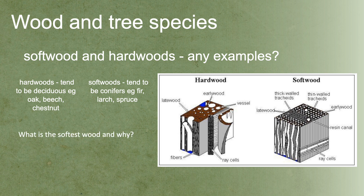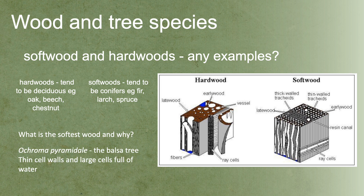Think about which is the softest wood you may know about — it's the balsa tree. You may have made little toy aeroplanes and toys out of balsa wood, which is the dried, thin sections of the balsa tree. It's got thin cell walls and large cells full of water, so when you dry it out, you get that very brittle structure.